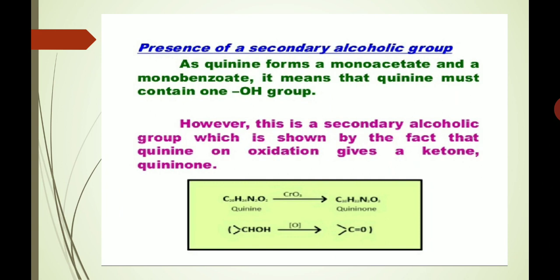We have to ascertain the functional nature of the oxygen. It has been found that quinine contains a secondary alcoholic group, as quinine forms a monoacetate and a monobenzoate, indicating that quinine must contain one OH group. This is a secondary alcoholic group, which is shown by the fact that quinine on oxidation gives a ketone, quinineone. So we can say that there is a secondary alcoholic group in the molecule of quinine.